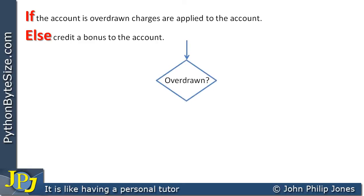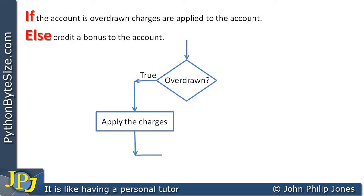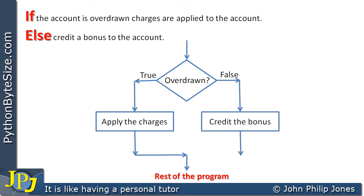Let's use a flowchart to explain what's going on here. We ask: are you overdrawn? If the answer is true, we apply charges to the account and carry on with the rest of the program. However, if being overdrawn is false, we take a different route — we credit the bonus to the account, and then carry on with the rest of the program.